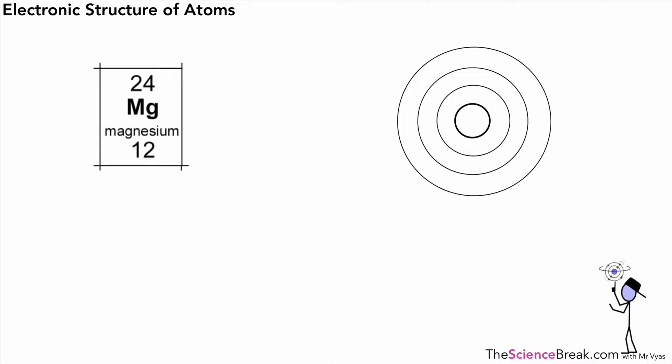Hello, in our last video we looked at how we could draw the structure of atoms. For the video today we're going to look at something called the electronic structure of atoms, but first let's remind ourselves of how we draw an atom from this information that we would find on the periodic table.